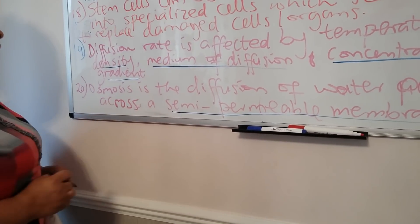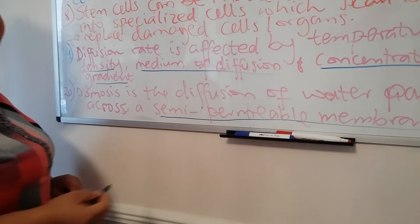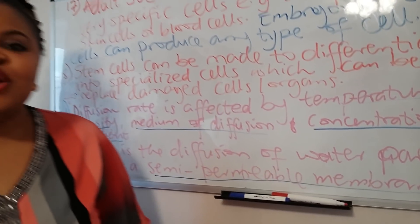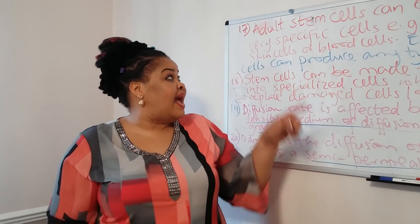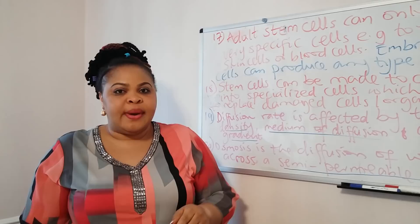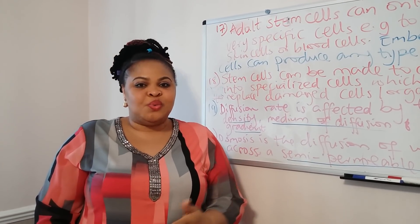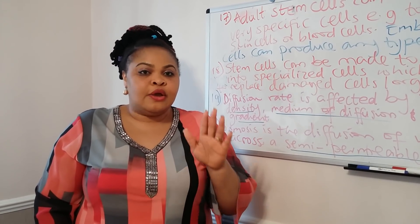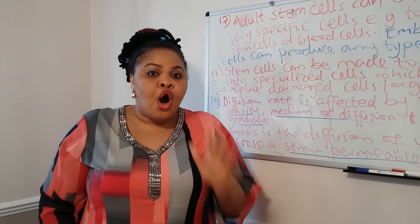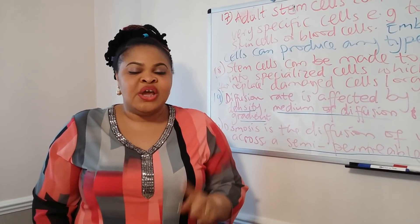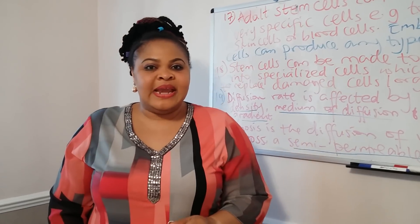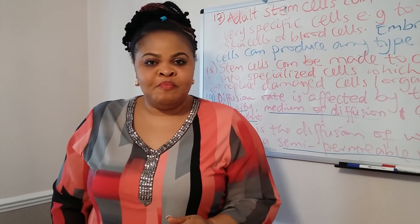A semi-permeable membrane means it would allow certain particles to pass through and certain particles would not be allowed to pass through. That's questions 11 to 20. The next one is 21 to 30. This is a checklist for all topics covered in the B1 paper you'll be taking in exactly a week. Keep watching!